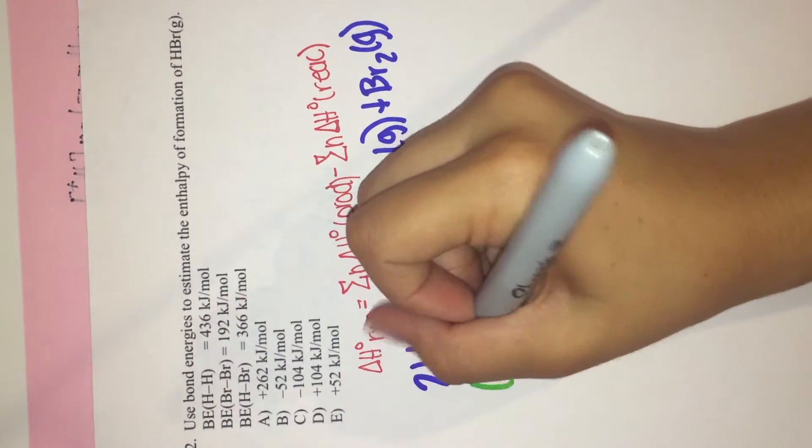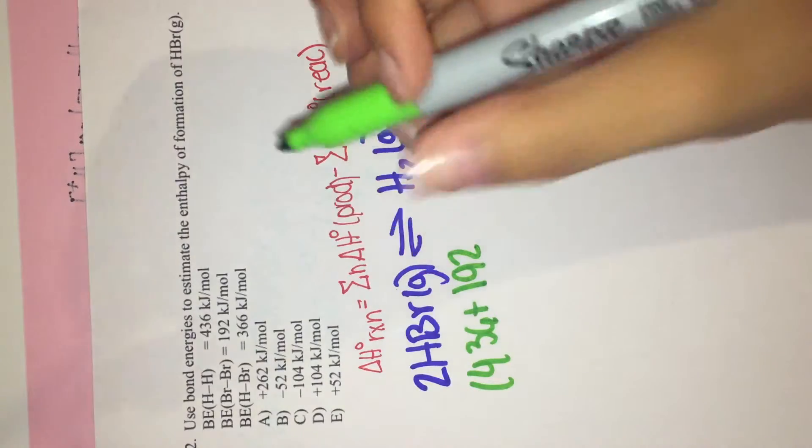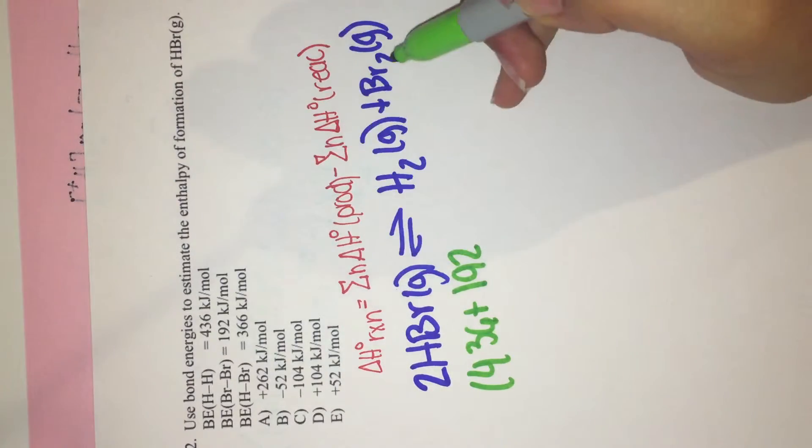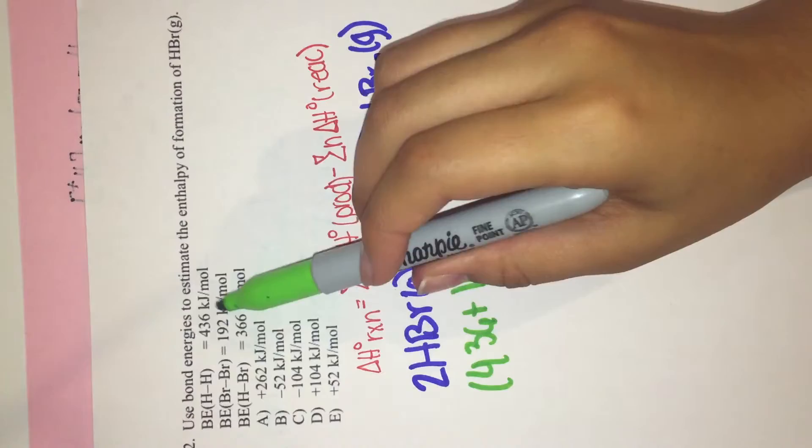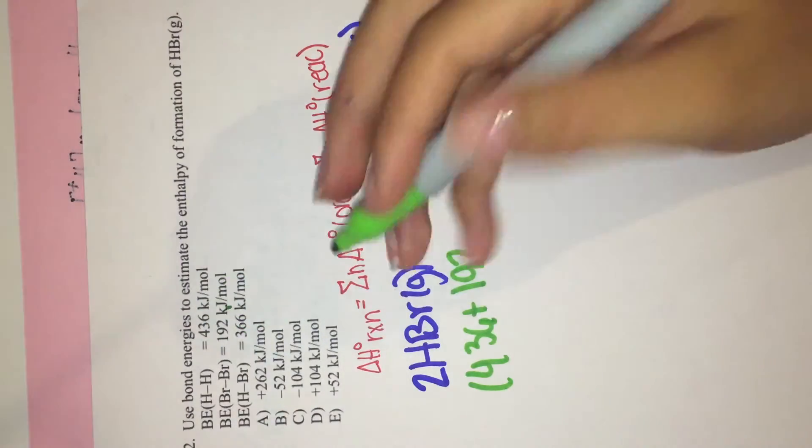This would be the products, which is bromide at 192 and hydrogen at 436.